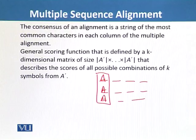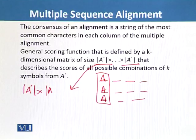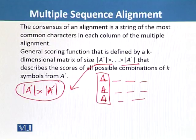At this point we will use a very general scoring function that is defined by a k-dimensional matrix delta of size A' into A' that describes the score of all possible combinations of k symbols from A'. Previously we studied that if we have a pairwise alignment, then we will return A' into A'. But if we want to consider the multiple sequence alignment, then we have to consider A' into A' into A'.